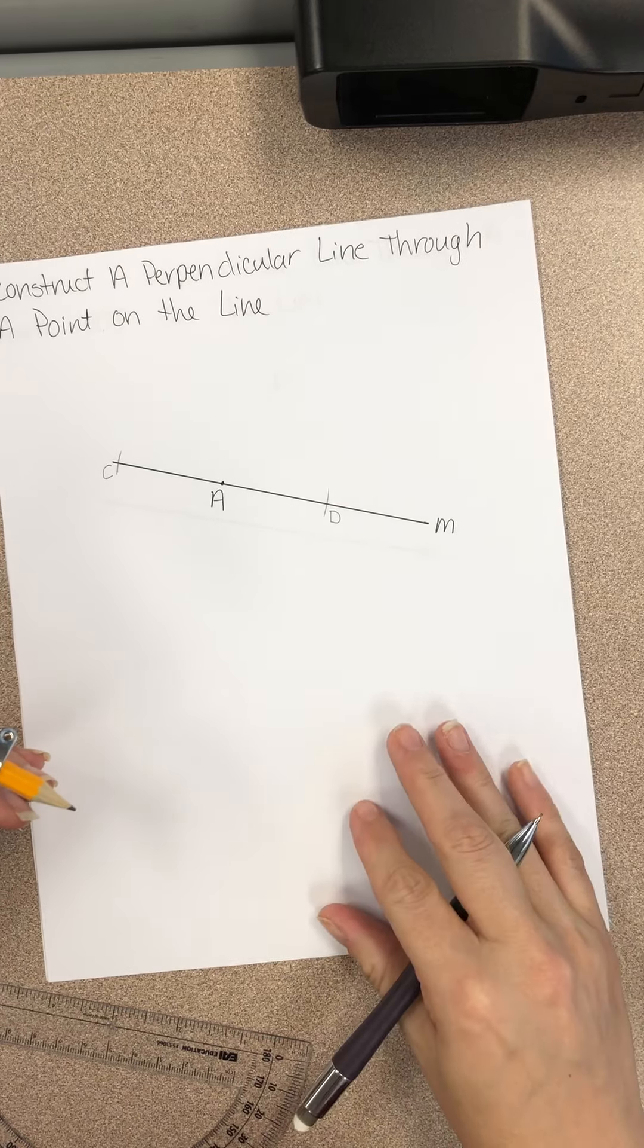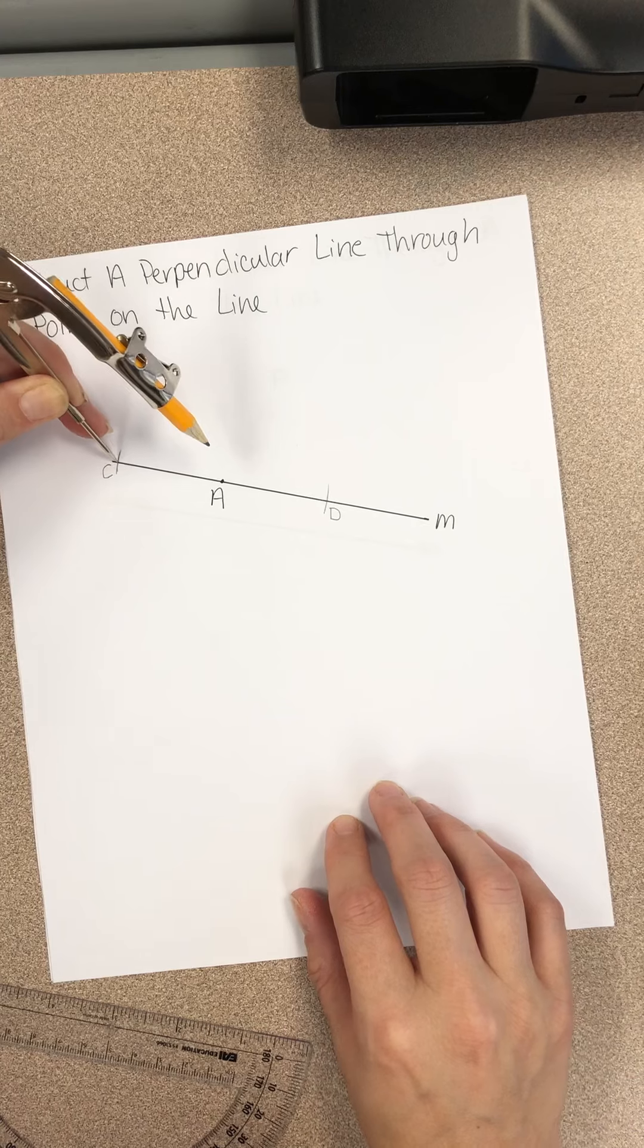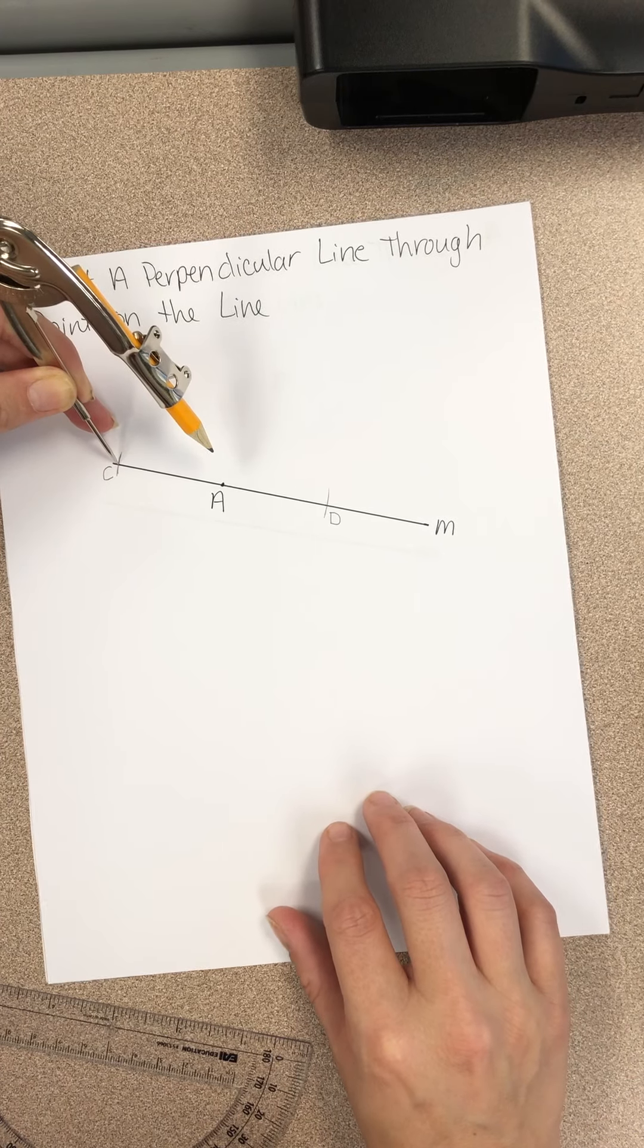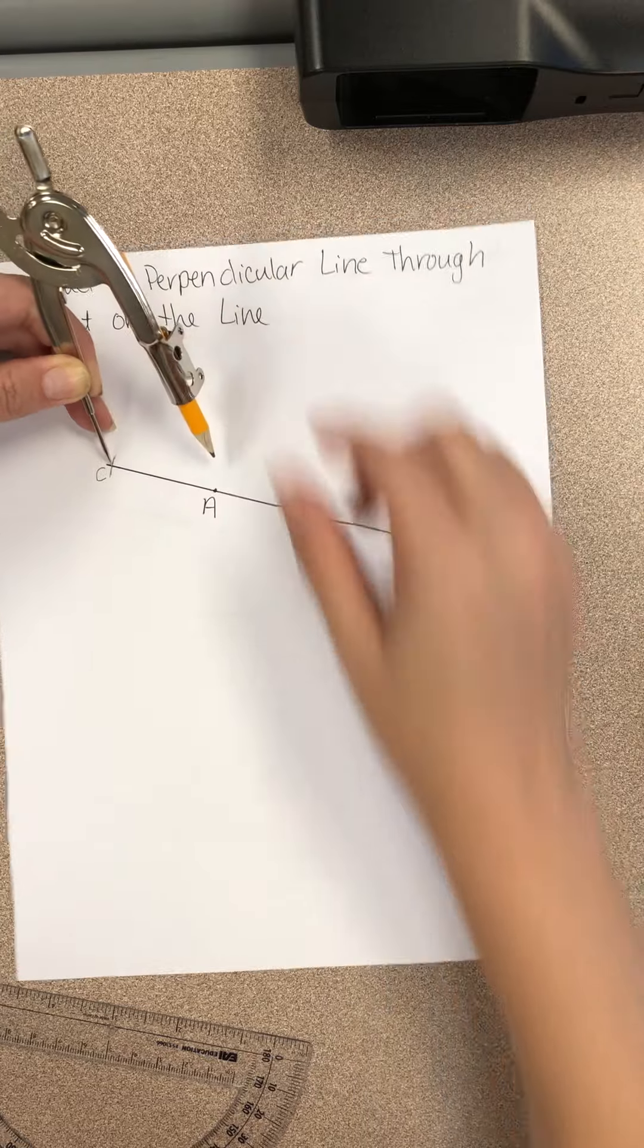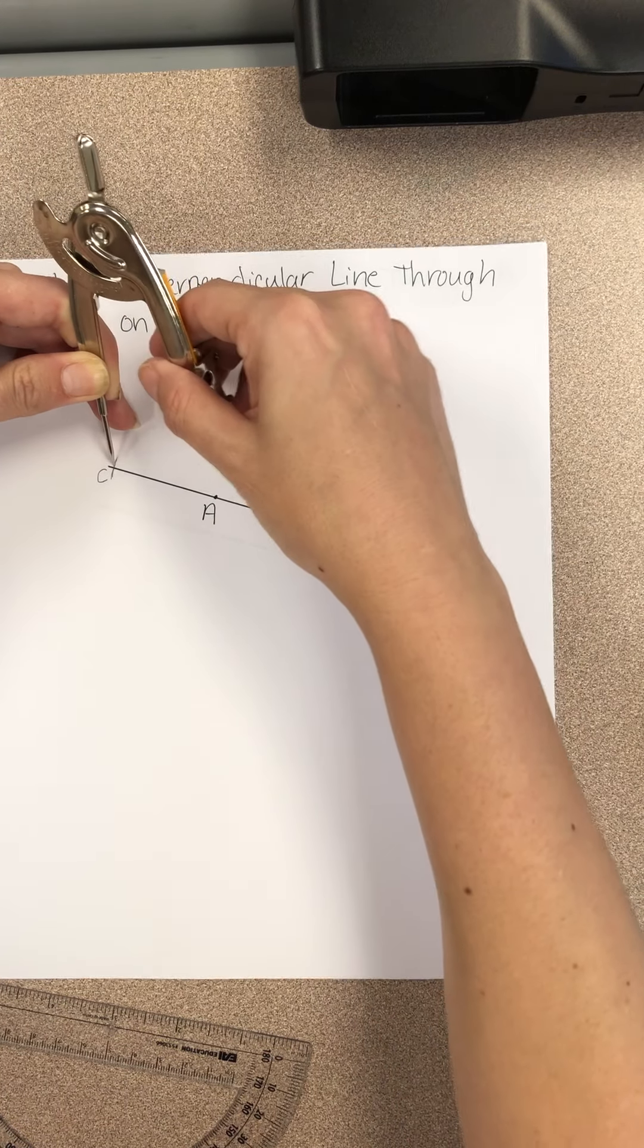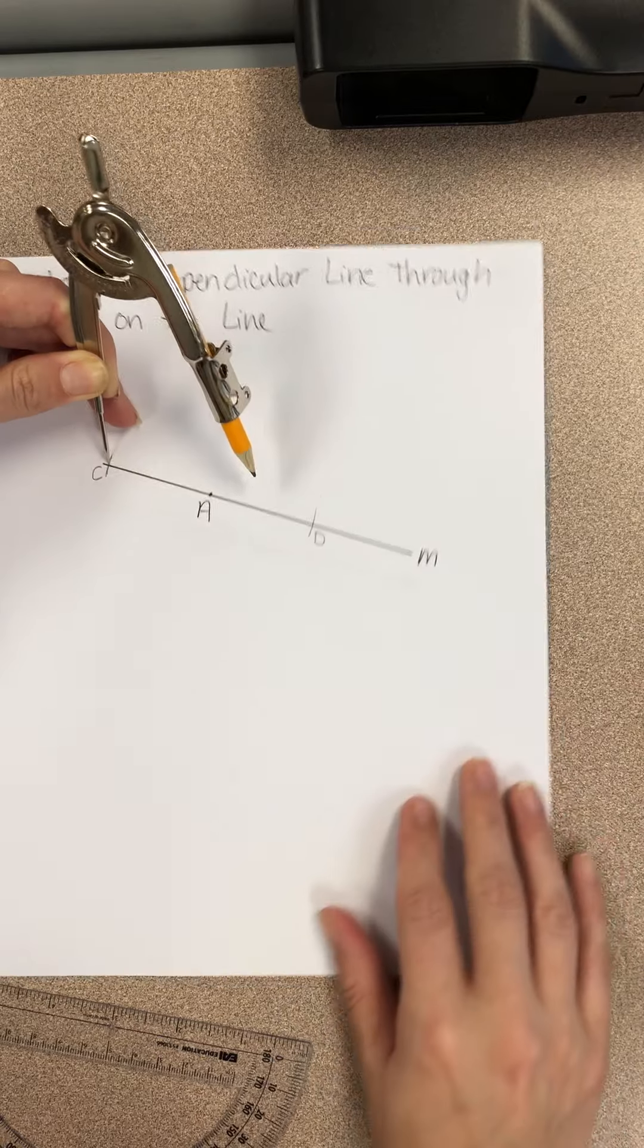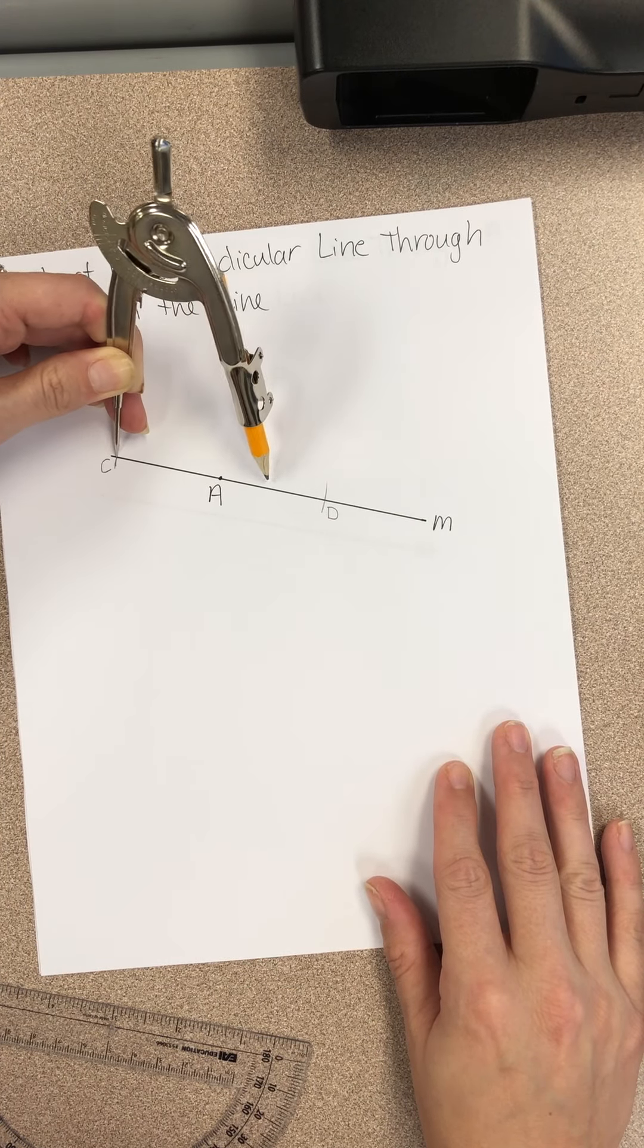Then it says to place the needle on point C and extend your pencil to lie between A and D. In other words, it needs to be somewhere in between here. Right now, my pencil just reaches A, so I need to make it a little bit bigger so that it's above, in between A and D. So you can see where that is.